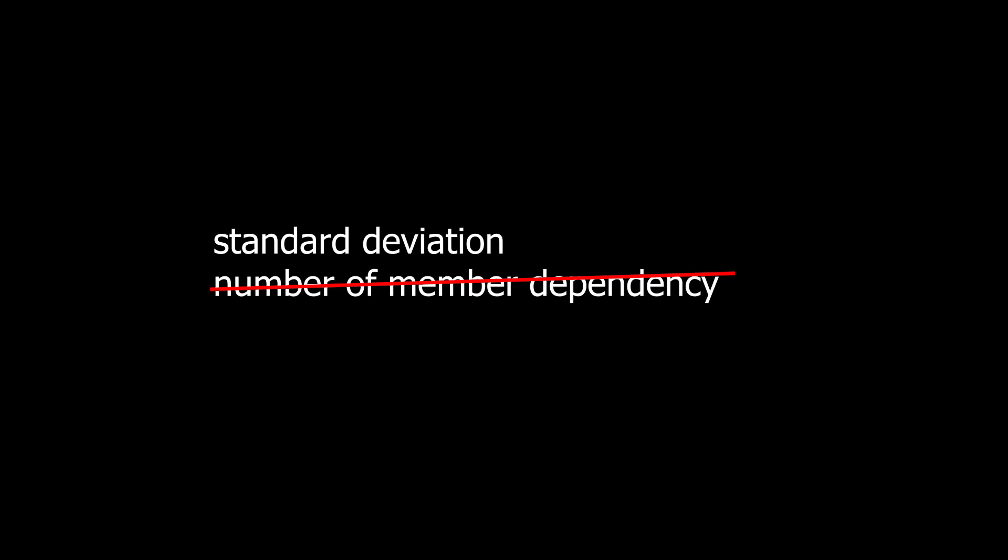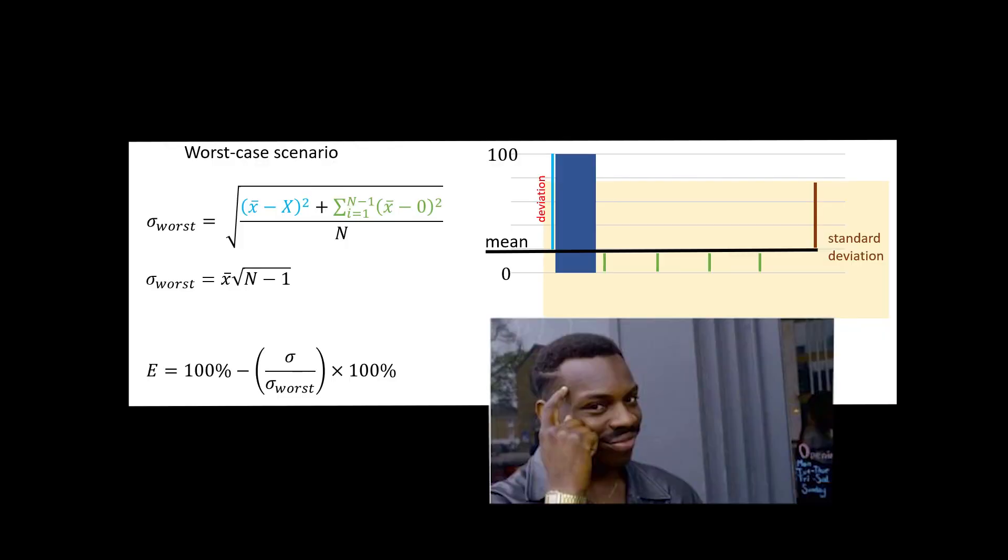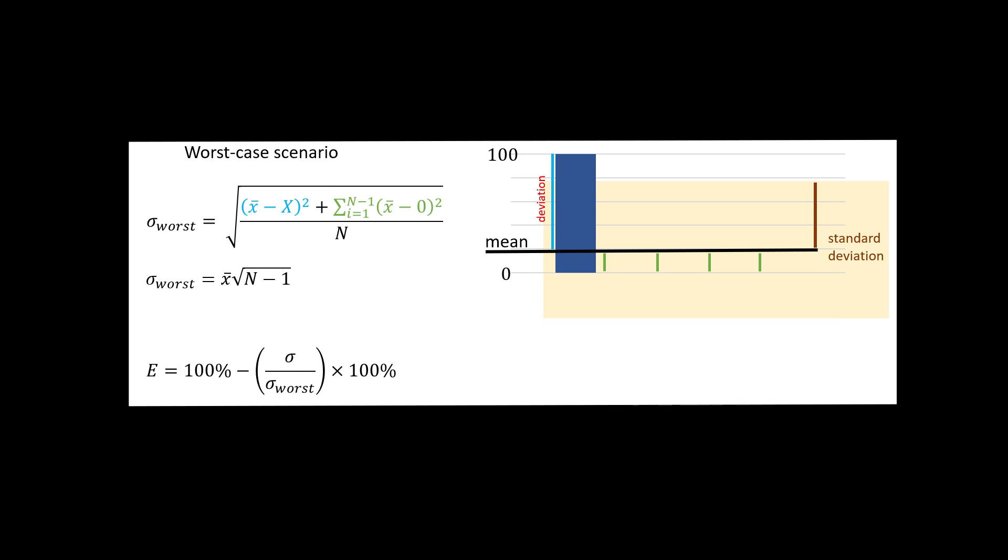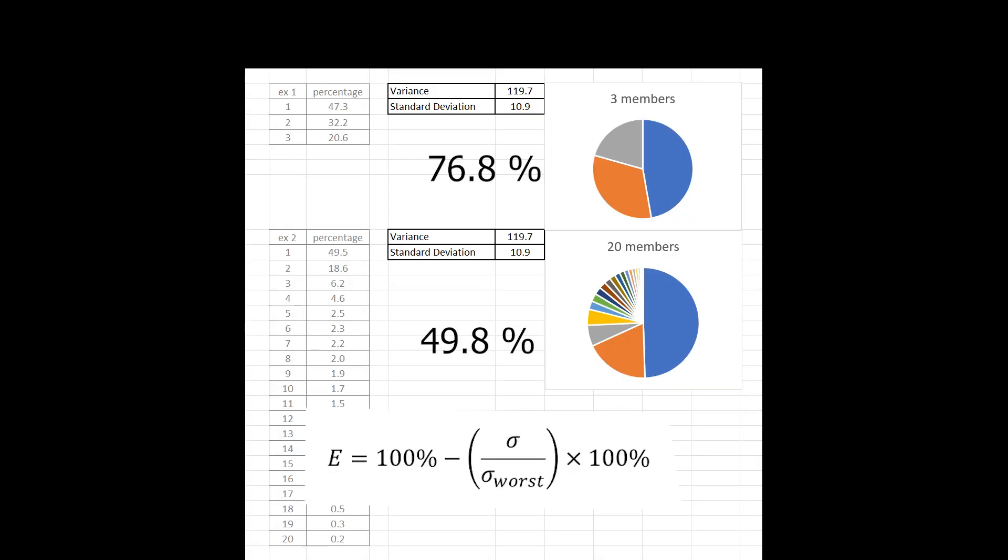Elimination of the dependence of the standard deviation on the number of members is done by taking the worst case scenario where only one person sings out of all the members. By taking the standard deviation of the worst case scenario, I can compare how even the line distribution is with other line distributions.